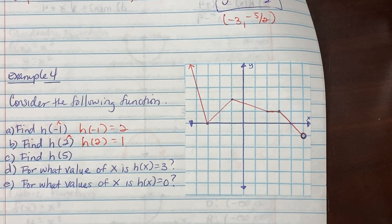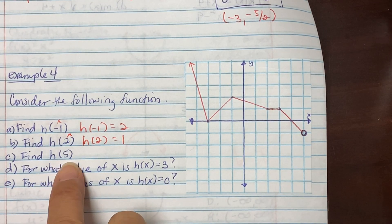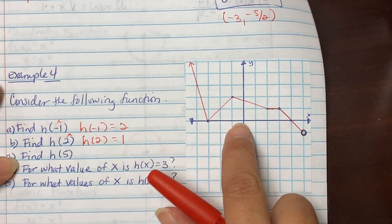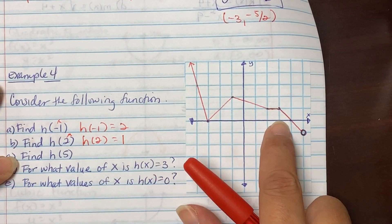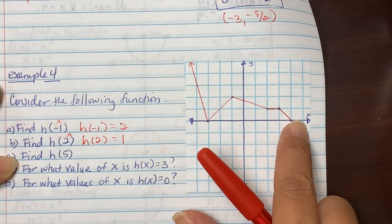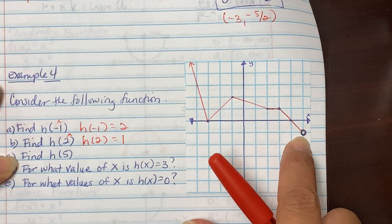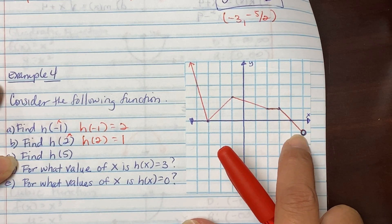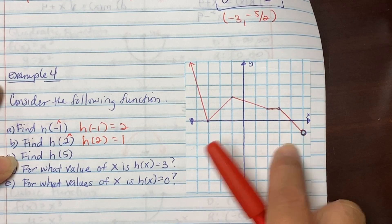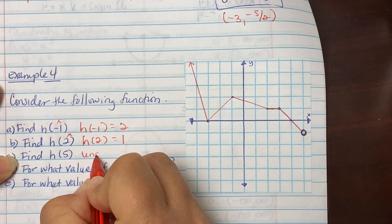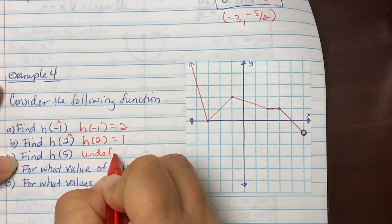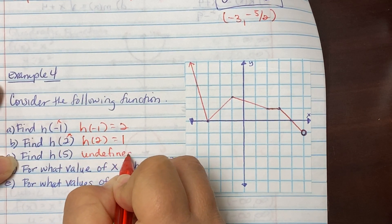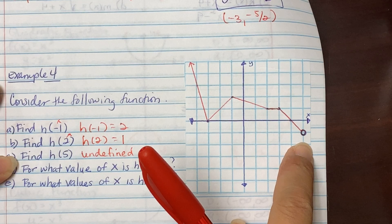For h(5): go to x = 5 on the graph and go down — there is an open circle at the y value. Because there's an open circle, this is undefined. The minute there is an open circle, that's an undefined piece.